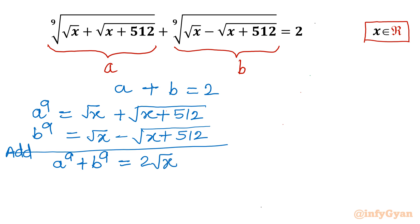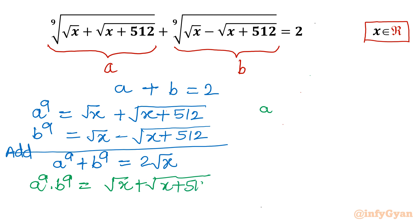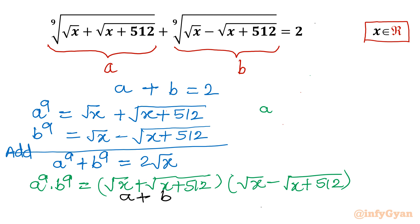Now I will consider the product: a⁹ times b⁹. It equals (√x + √(x+512)) times (√x − √(x+512)). Here a plus b times a minus b is clearly visible, so I will apply the difference of two squares formula: (a+b)(a−b) = a² − b².